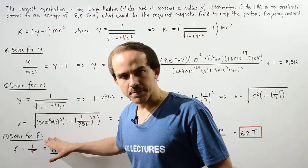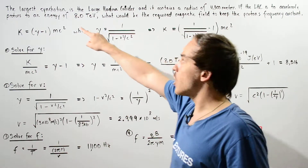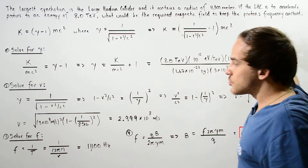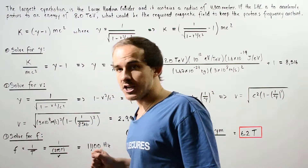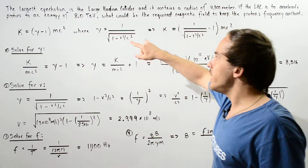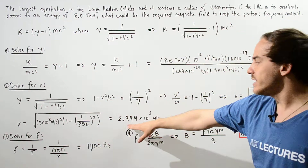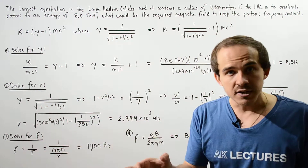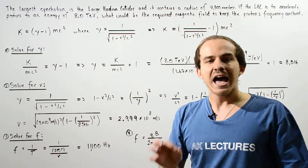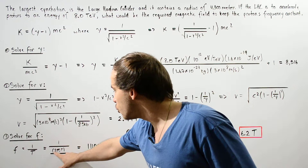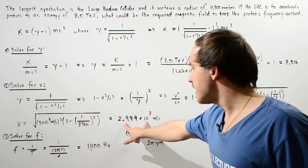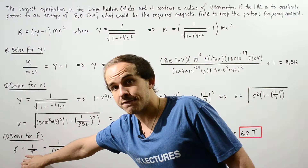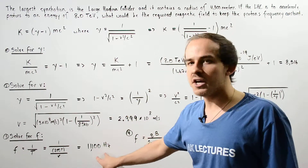In step three, we calculate the frequency of the particle at this kinetic energy and velocity. The frequency equals 1 divided by the period, and the period is the circumference divided by the velocity: 2 pi R divided by V. With R equal to 4,300 meters and the velocity we found, we get a frequency of 11,100 hertz.